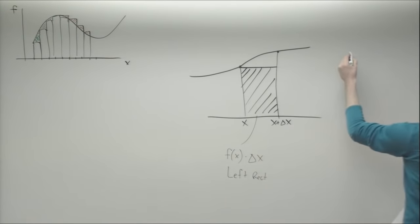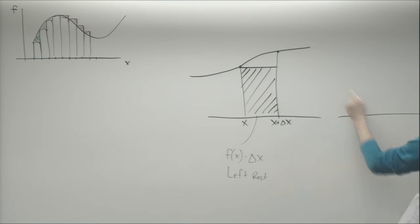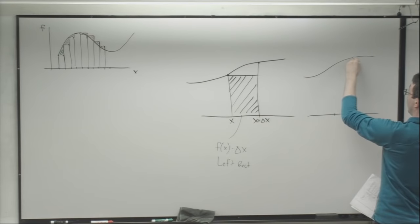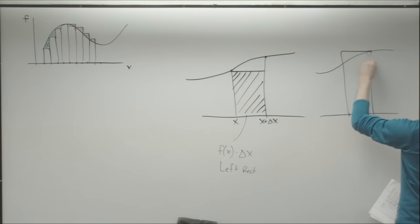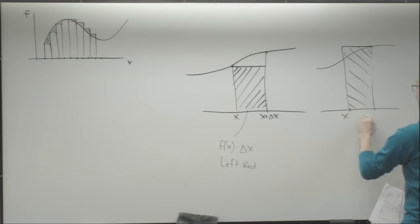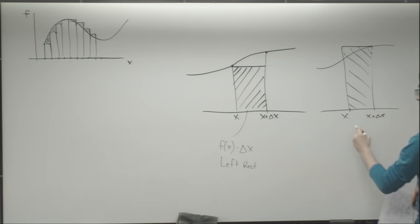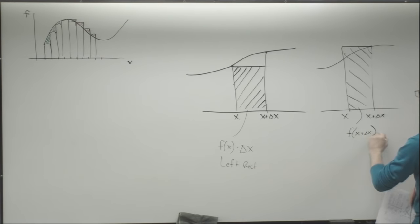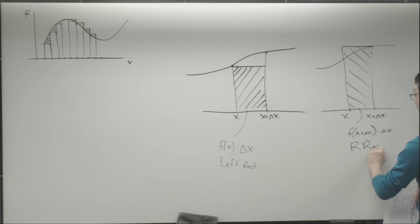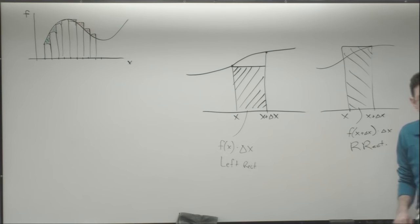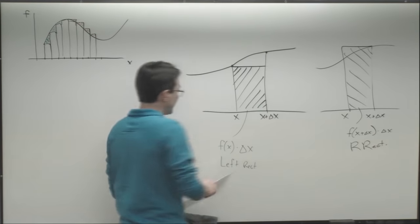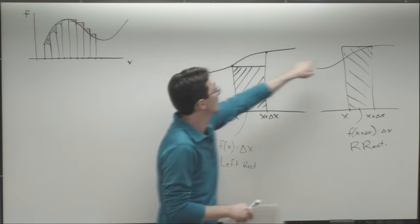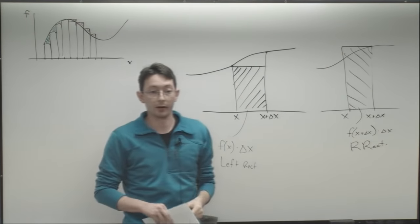I could also equally well approximate the entire area by the right rectangle, which would say: area equals f of x plus delta x times delta x. So what would I do if I wanted to get better error properties and not undershoot or overshoot the actual area quite so badly?